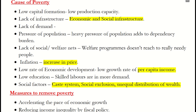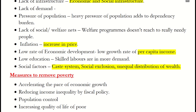Measures to remove poverty: With economic growth, more employment and income opportunities are created, and more people employed means reduced poverty. Fiscal policy is one measure the government can use — they can collect higher taxes from rich people and use the money for free education, hospitals, and food for really needy people. Population control also helps: less population means fewer mouths to feed, which makes it easier to solve problems. Additionally, initiating policies to improve the quality of life and standard of living for poor people is essential.